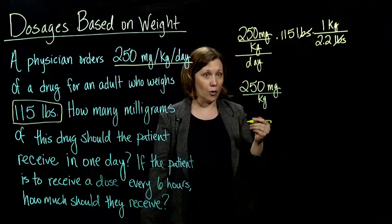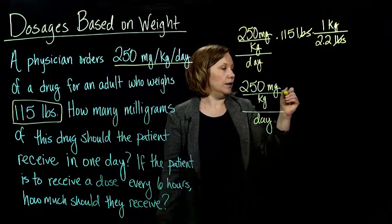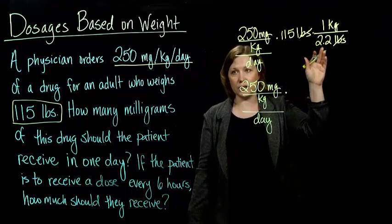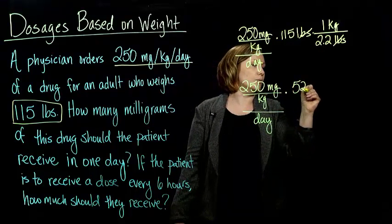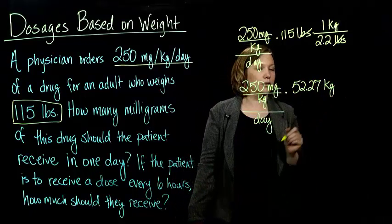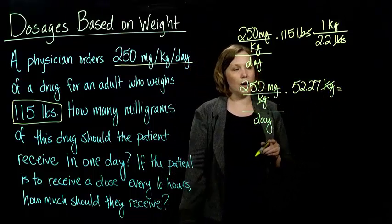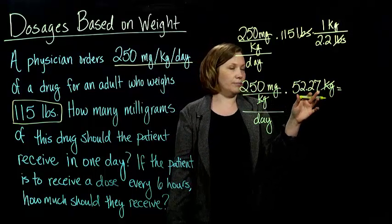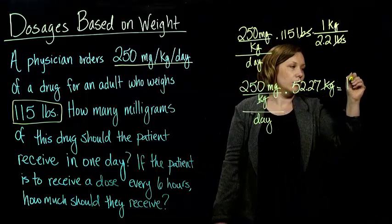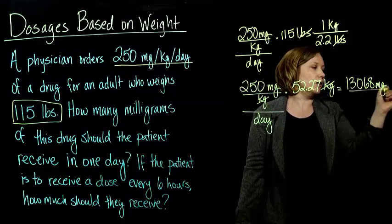You could do this conversion separately before you do the dosage calculation if that's easier for you. So 115 divided by 2.2 ends up as 52.27. So now I've got my answer in terms of kilograms, and I see my kilograms cancel out. So I can do 250 multiplied by 52.27, and that gives me 13,068 milligrams per day, if we round.